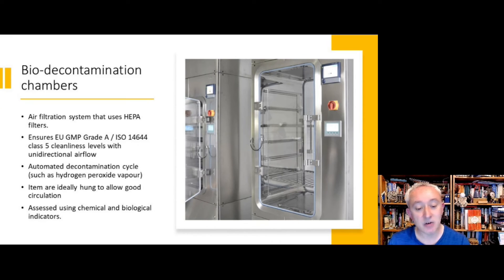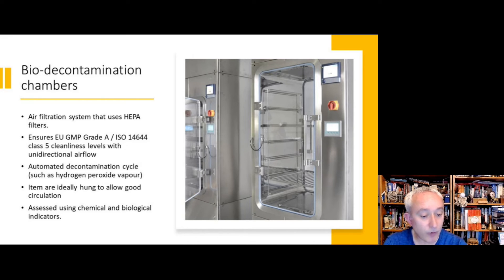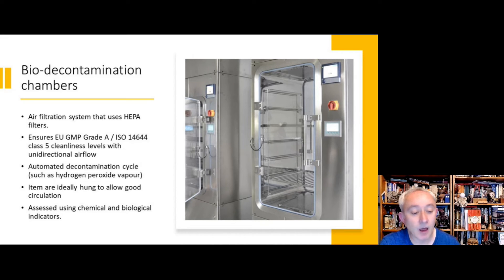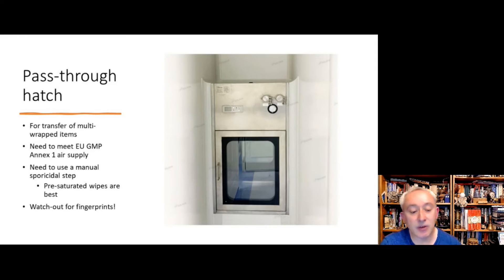Hydrogen peroxide is produced in situ within the chamber by flash evaporation — liquid hydrogen peroxide hits a hot plate and vapor is generated. Concentration is controlled through the air supply via sterile compressed air, and the key factors to control are temperature and humidity.